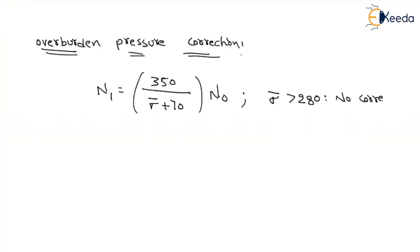Overburden pressure correction. Can you recall the formula what we have discussed? The corrected value N1 will be equal to 350 divided by sigma bar plus 70 into observed value N0. Now, what are the limitations of this method? If your overburden pressure, sigma bar, is greater than 280, no correction required. That means you can consider N1 is equal to N0.